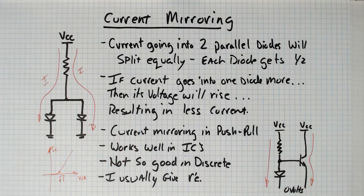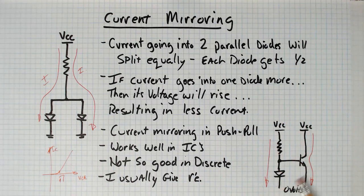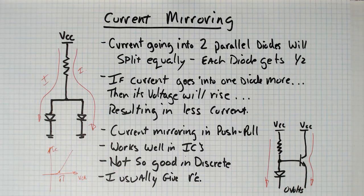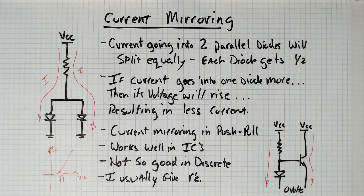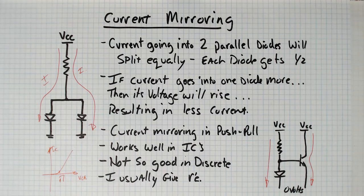Usually I'll give you what R-prime-E is, because I recognize that this current mirroring doesn't really work that well when you're building circuits with discrete parts. And so I just give you R-prime-E, and then from that you do your AC analysis.